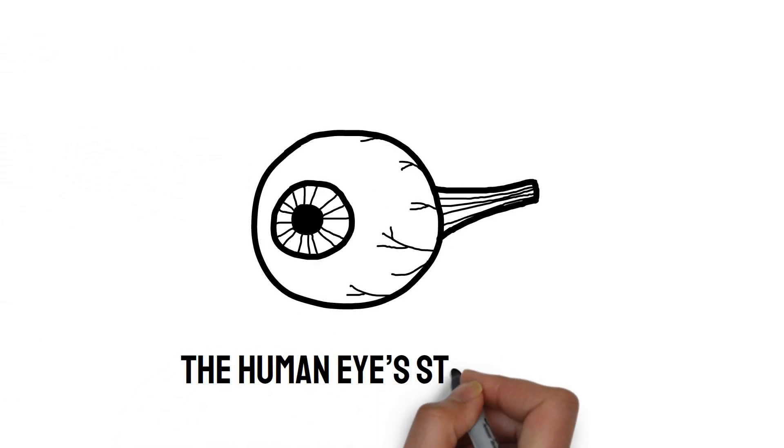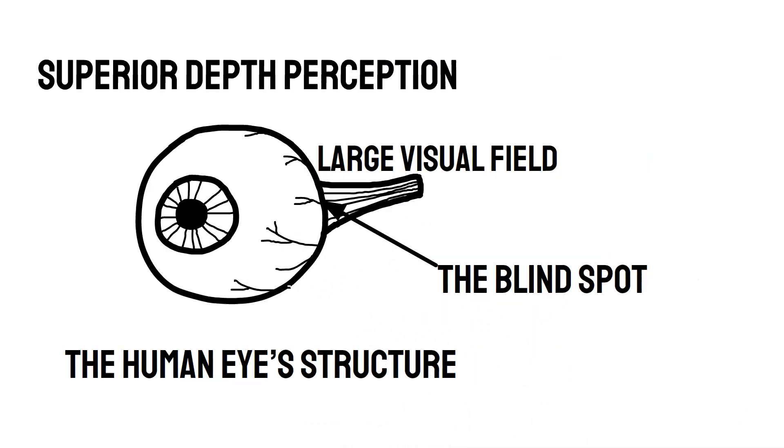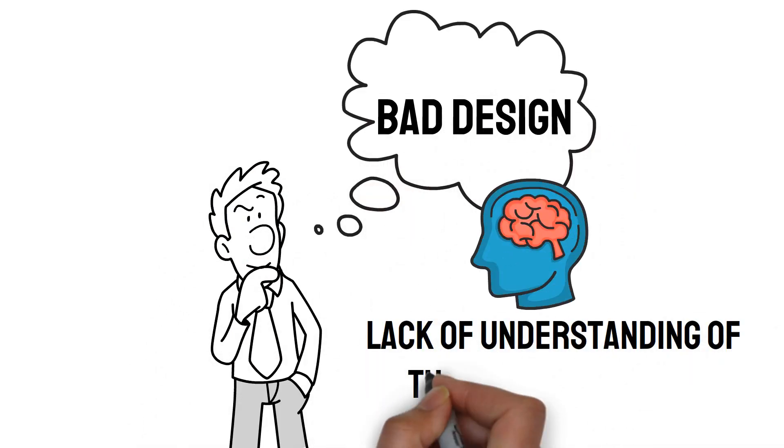For example, the human eye's structure allows for superior depth perception, and the blind spot is a trade-off for having a large visual field. Moreover, what we consider bad design might reflect our lack of understanding of the broader system.